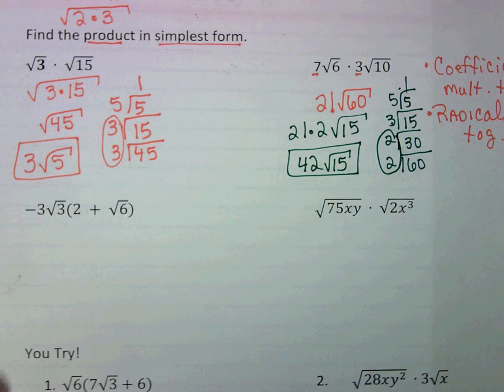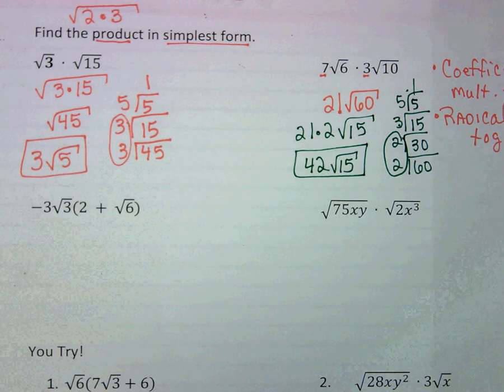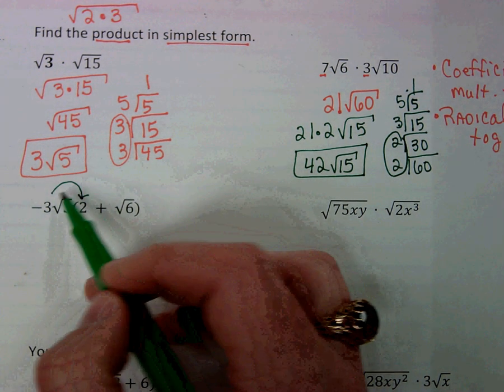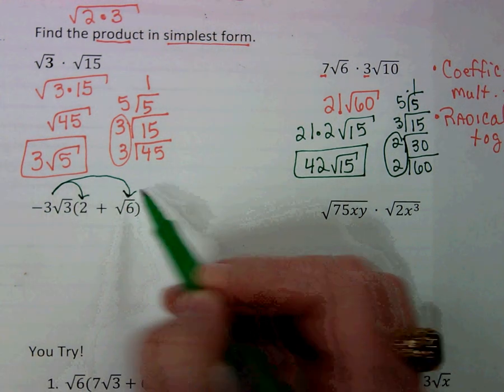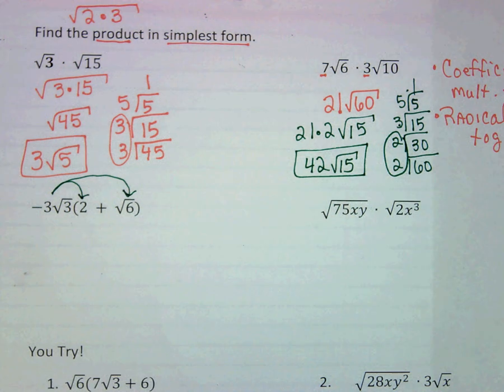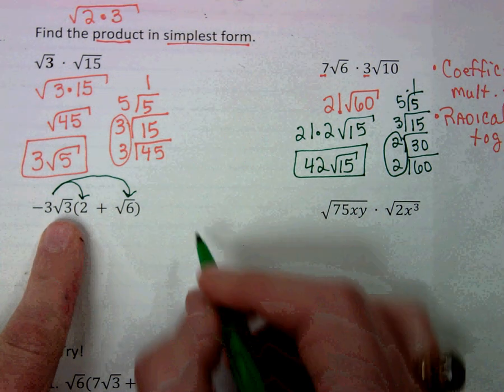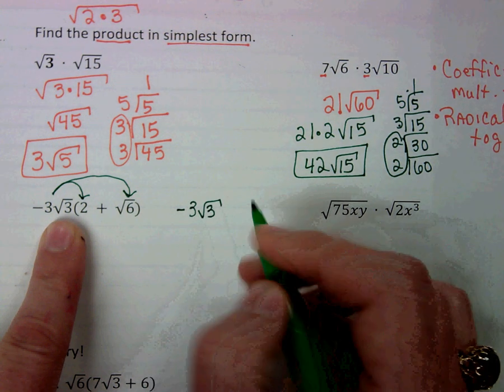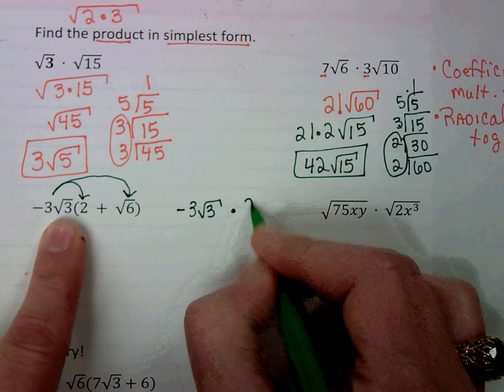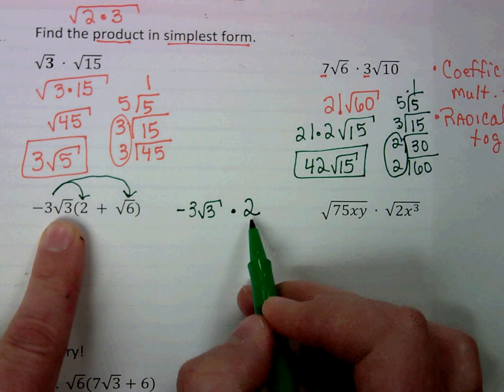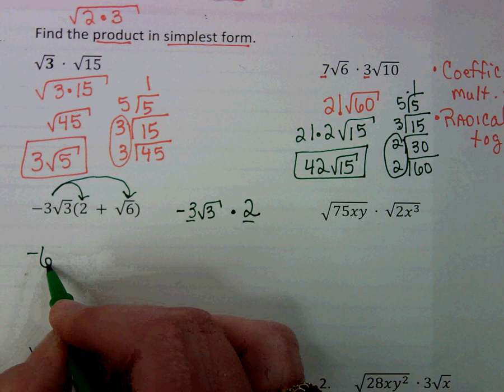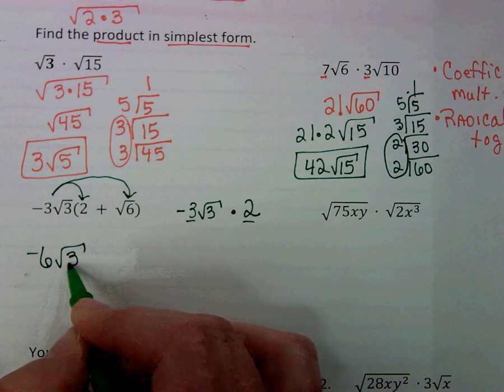The next one is going to involve the distributive property. So we're going to distribute. Remember when we're multiplying and distributing we can distribute it to anything. They don't have to be like terms. Now right here I'm just going to write this to the side because I want you to see what we're doing. We're doing -3√3 times 2. 2 is not a radical, so the 2 and the -3 get multiplied together, and then it stays √3.